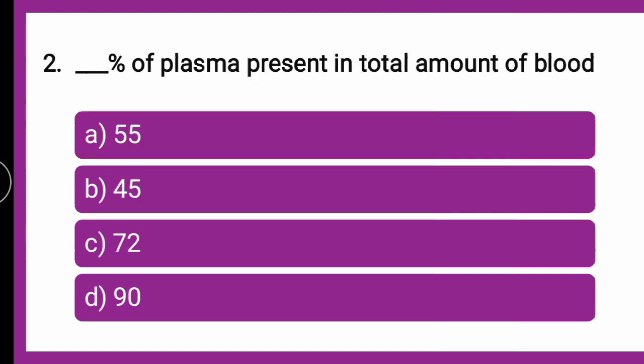The next question is: dash percentage of plasma is present in the total amount of blood. If you talk about the composition of blood, plasma is how many percent — whether it is 55%, 45%, 72%, or 90%? Put your answers in the comment box first, then we will go for the explanation.